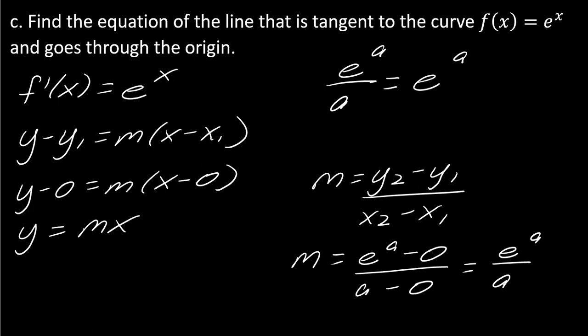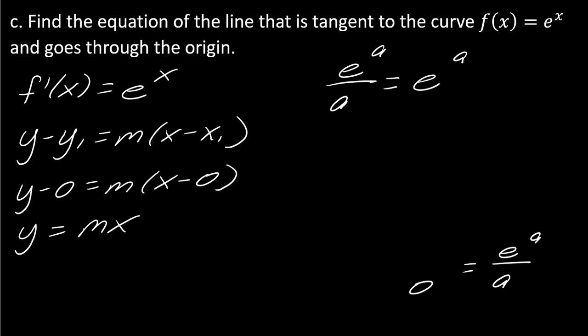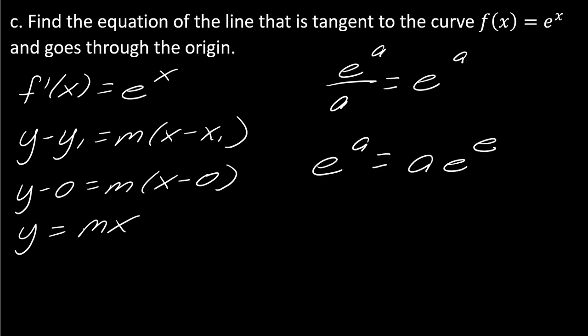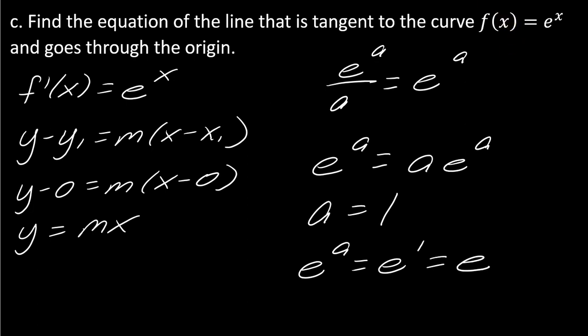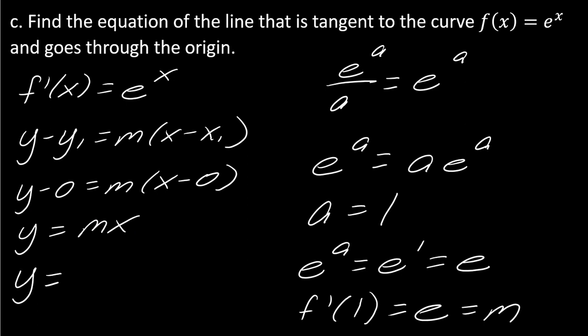I've created an equation I can solve. Multiplying both sides by a gives e to the a equals a times e to the a. Dividing both sides by e to the a gives a equals 1. So a equals 1, which means the point of tangency is (1, e). The slope m equals f prime of 1, which is also e. So the tangent line equation is y equals e times x.